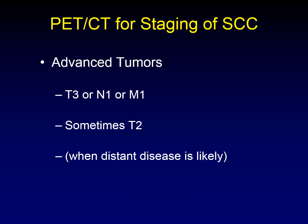PET-CT is very useful in the staging of head and neck squamous cell carcinoma, particularly for advanced tumors — those that are T3 in size, have spread to lymph nodes (N1), or have spread distantly hematogenously (M1). Sometimes a T2 lesion is worthy of evaluation depending on aggressiveness and invasion of key structures. We use PET-CT when distant disease is likely; if it's unlikely, MRI or CT suffices, but PET-CT lets us screen the whole body.